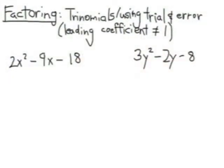Now we're factoring trinomials using trial and error. However, the leading coefficient is not 1. In other words, the very first term has some number other than 1 in front of it, which just makes it a little more complex. Let's take a look.